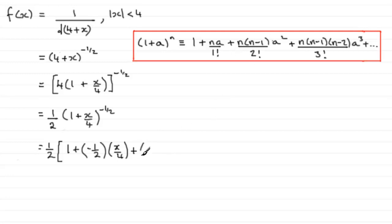Then plus n times (n-1), so the power is minus a half, now we need to subtract 1 from that, that'd be minus 1 and a half, but I'd certainly encourage you to write it as minus 3 over 2. Then it's a squared, so a is the x/4, so (x/4) all squared, and it's over 2 factorial.